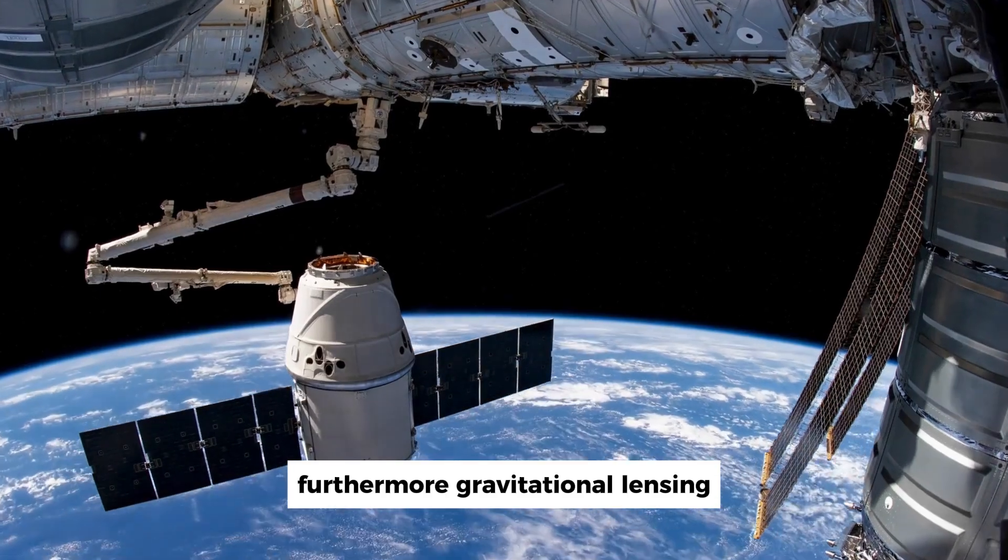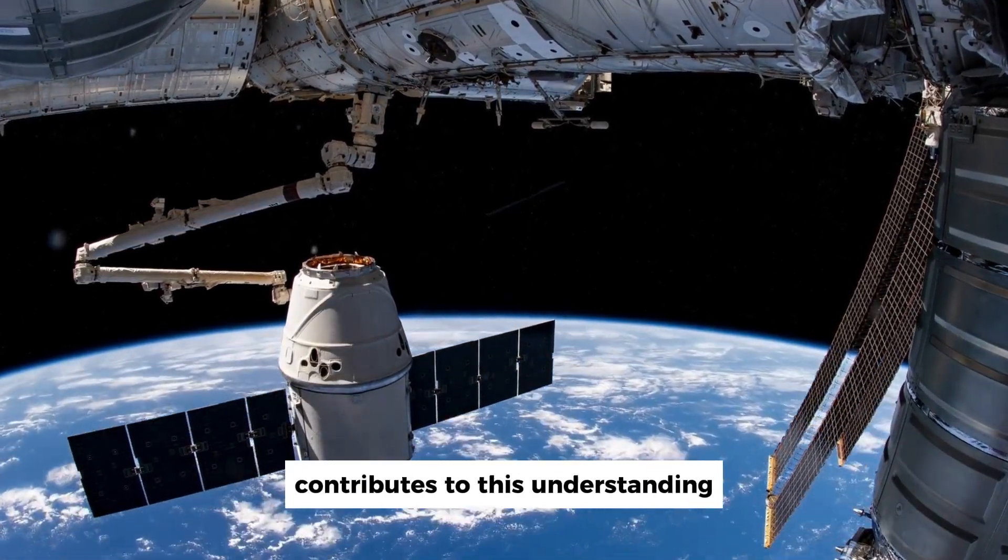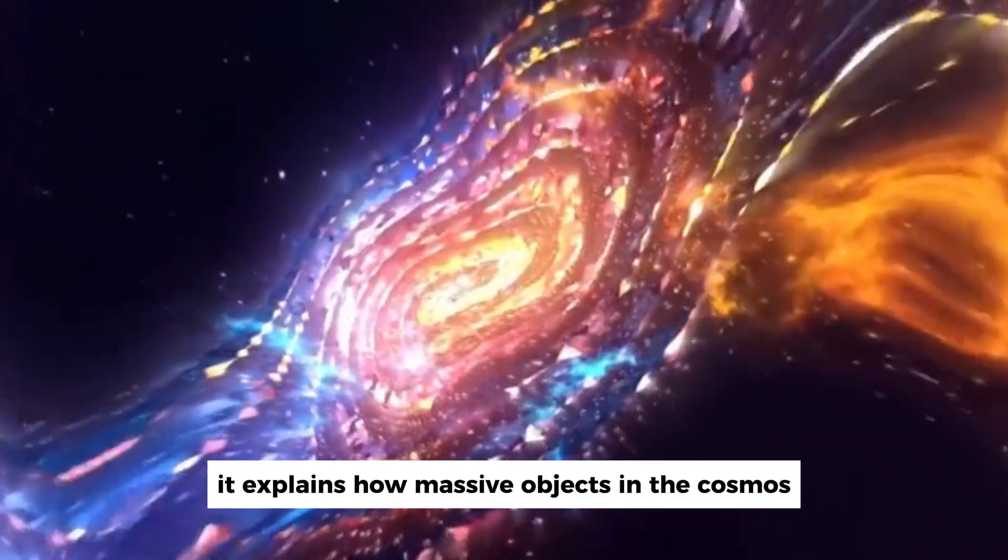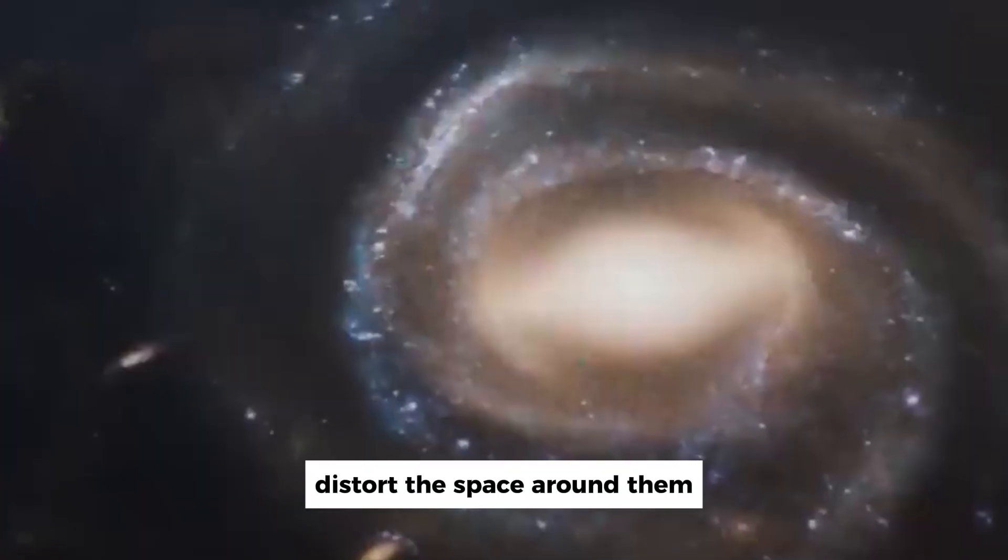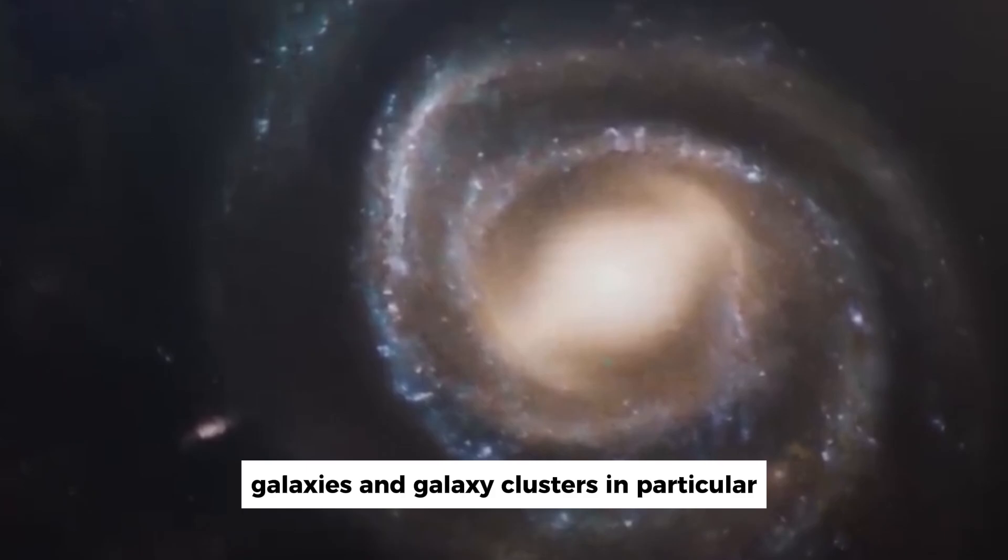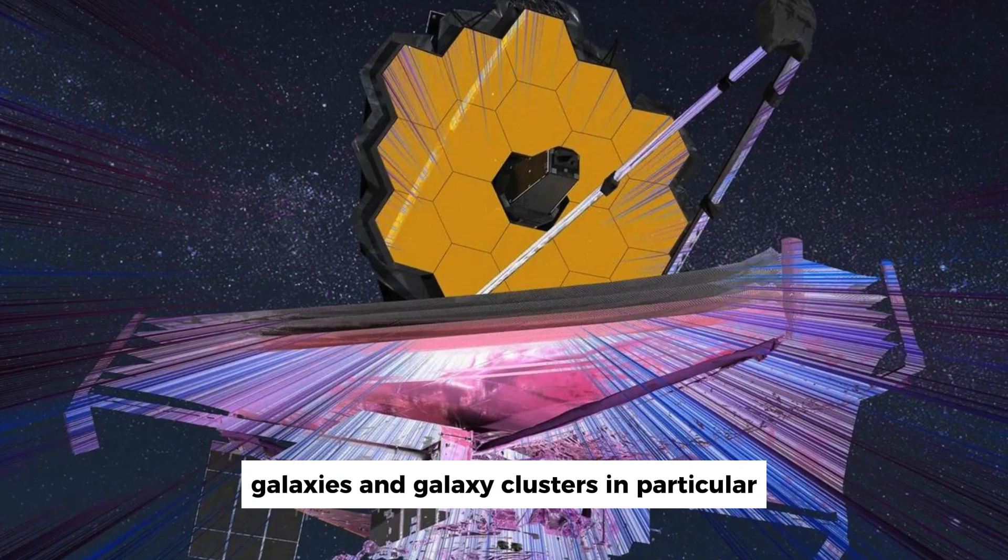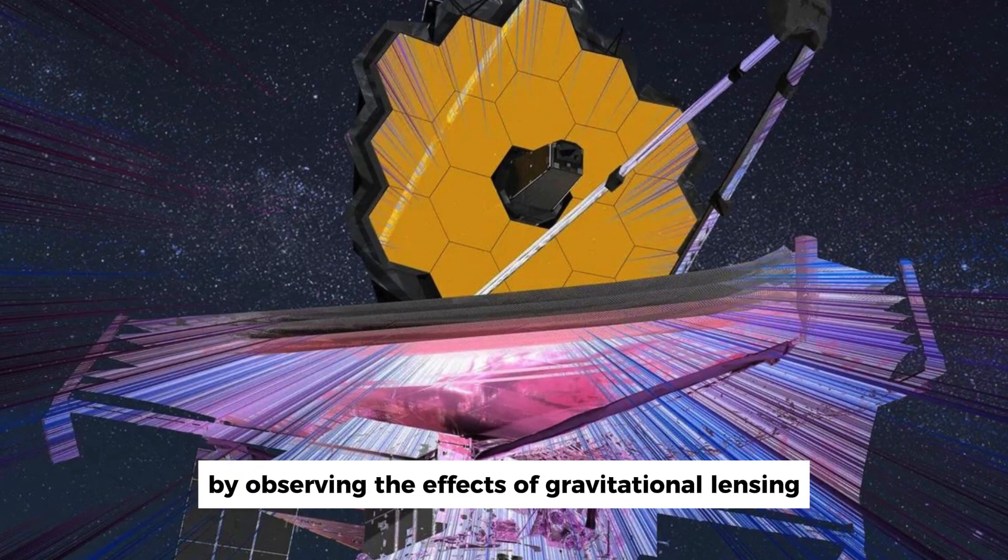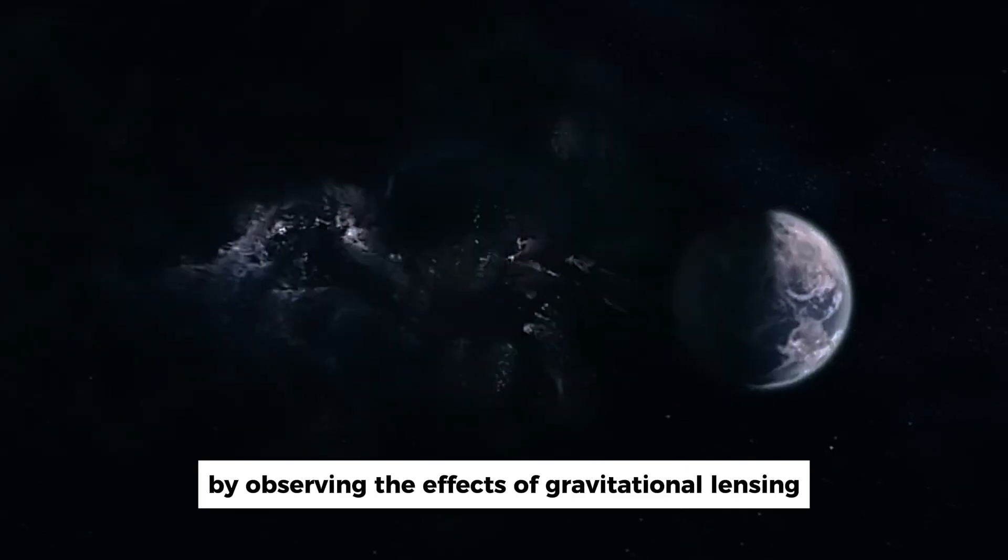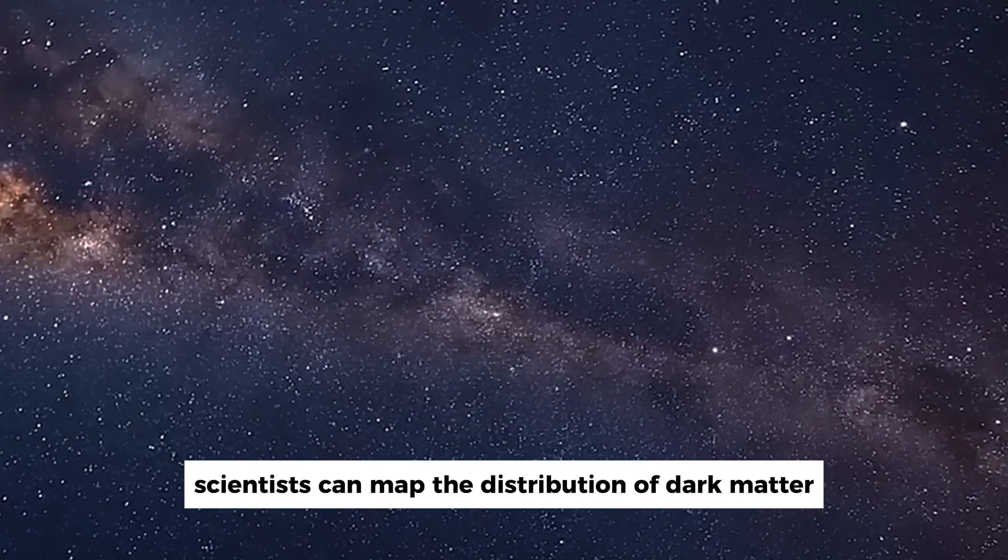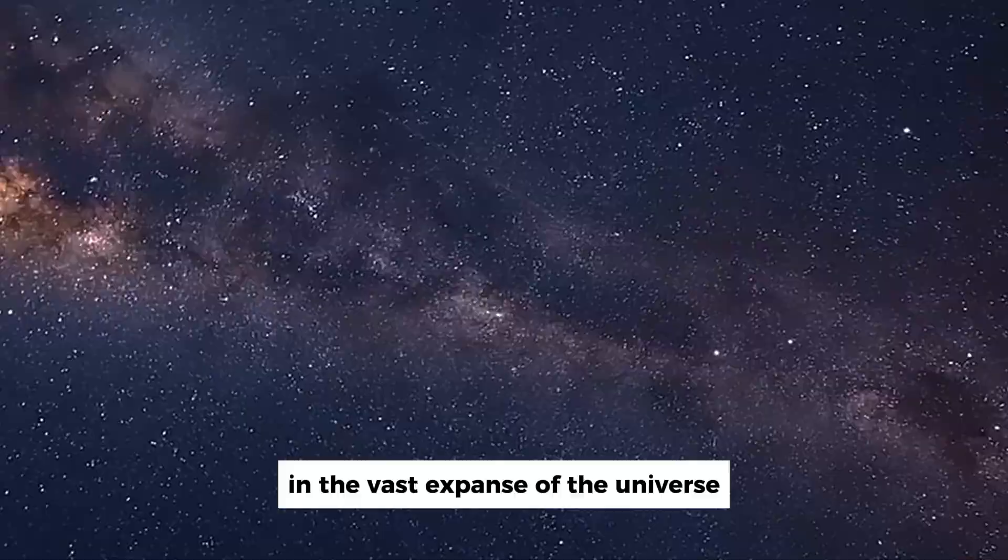Furthermore, gravitational lensing, another crucial aspect, contributes to this understanding. It explains how massive objects in the cosmos distort the space around them, causing light to bend as it passes through. Galaxies and galaxy clusters, in particular, induce significant warping of space-time. By observing the effects of gravitational lensing in Webb images, scientists can map the distribution of dark matter in the vast expanse of the universe.